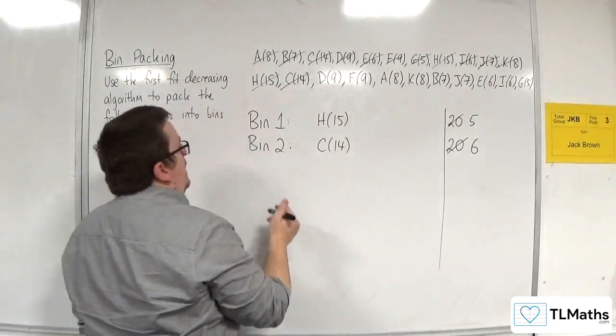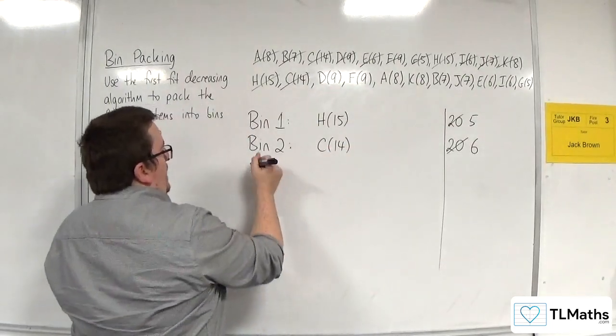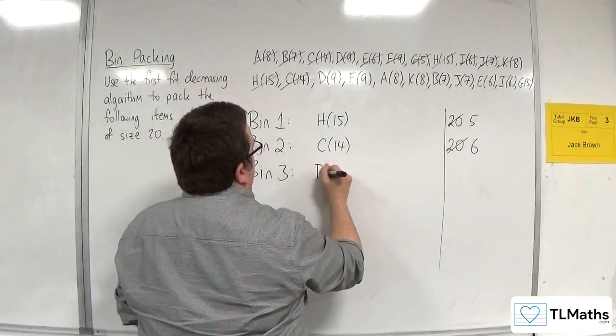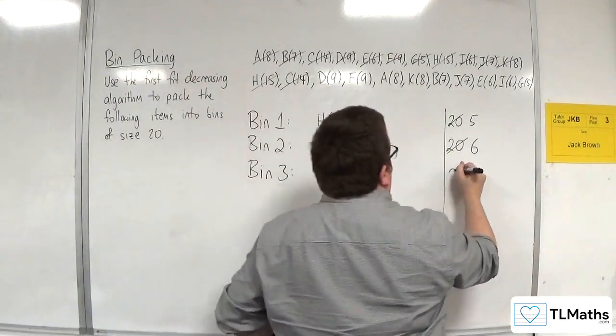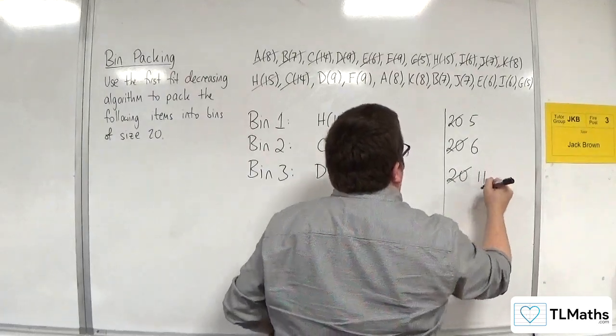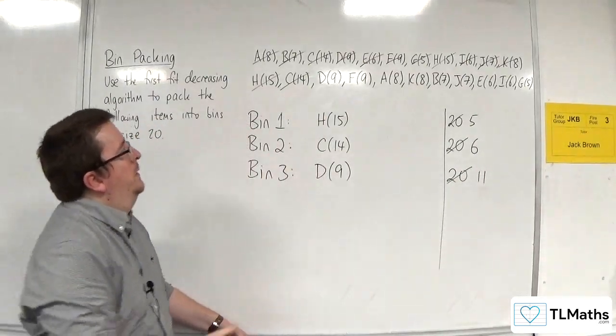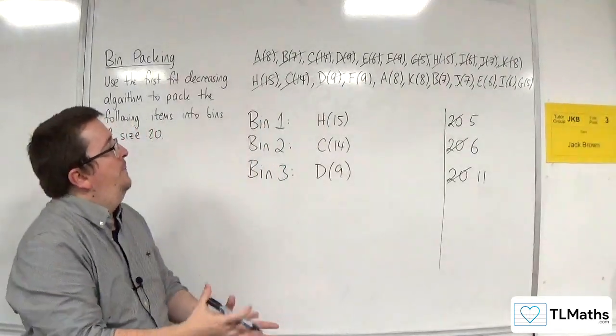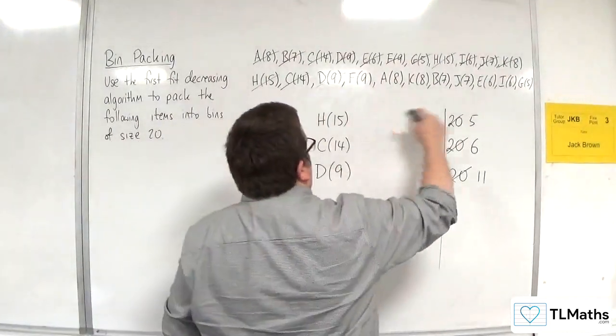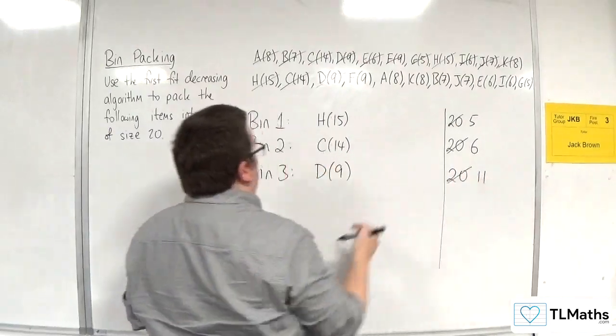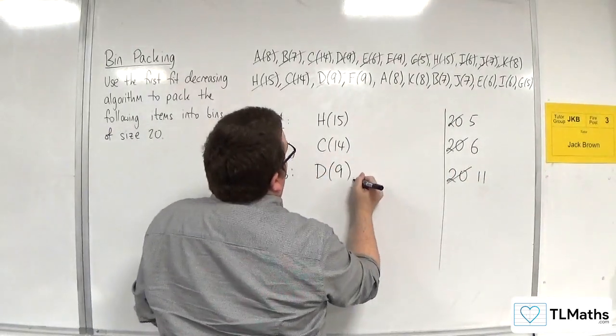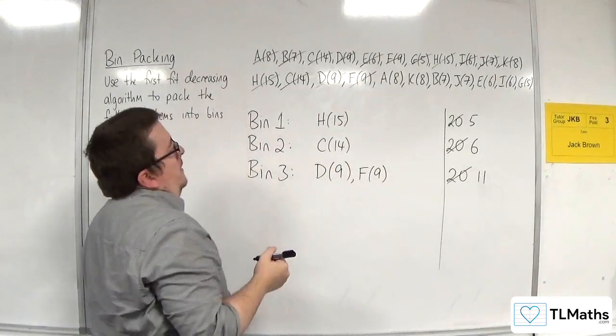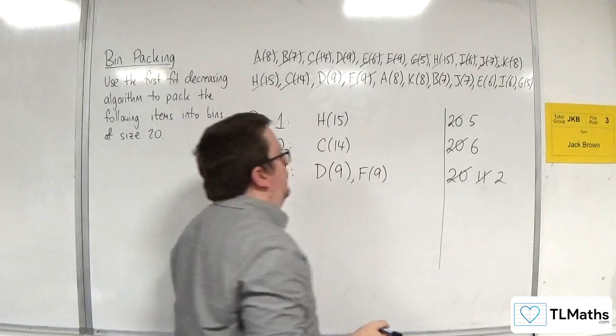Okay. So, I've done H and I've done C. Next one is D with 9. So, that won't fit in bin 1 or bin 2. So, I've got to go to bin 3. So, D9. And a size of 20 has gone down to 11. So, D's gone. Right. Next one along is F. That's 9 as well. It doesn't go into bin 1 or 2, but it does go into bin 3. So, I'm going to put F9 into bin 3. And so, that brings my available space down to 2.